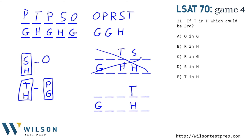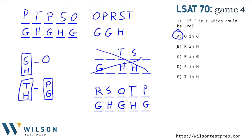T in the fourth spot means P in G would be in the fifth spot. Then S with H has to come before O — S can't be first because it can't be in G, so it has to be in the second spot with O after it. That gives us two valid arrangements. What's third? It could be P and G, or O and G. O and G is one of our answer choices; P and G is not. All other options are not possibilities, since we've figured out exactly the two ways this hypothesis can be satisfied.